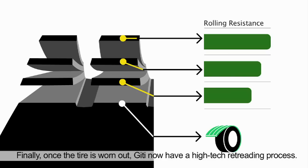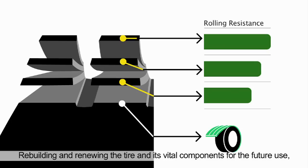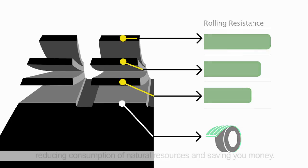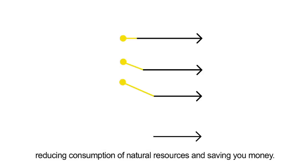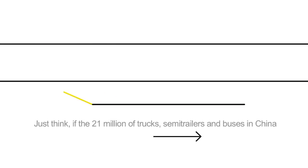Finally, once the tire is worn out, JT now have a high-tech retreading process, rebuilding and renewing the tire and its vital components for future use, reducing consumption of natural resources, and saving you money.